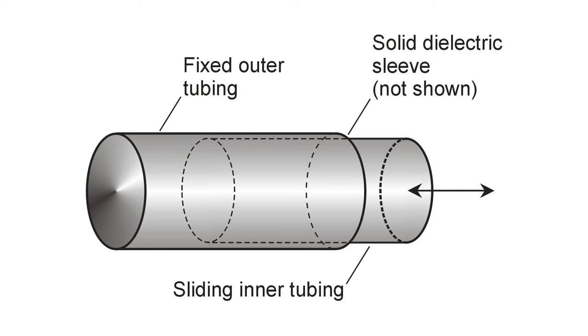I call it a trombone capacitor, but the technical term for it is coaxial capacitor. What it comprises is simply two lengths of metal tubing, one slightly larger than the other, separated by a sleeve of solid dielectric, such as polyethylene.